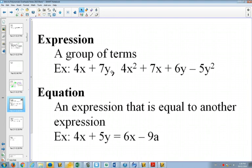And an equation, an algebraic equation, has an equal sign. So when you make one expression equal to another expression, you make an equation. So in that example, we have one binomial, 4x plus 5y, equal to another binomial, 6x minus 9a. And that makes it an equation. So an equation has an equal sign. An expression doesn't have an equal sign.